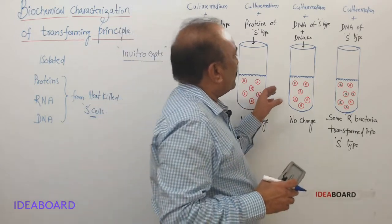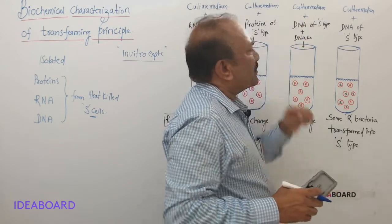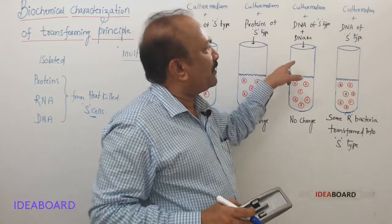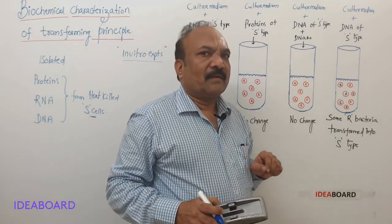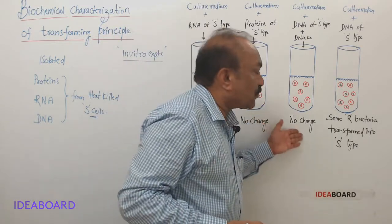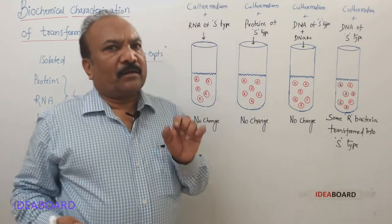Now let us see here. They have added DNA of S type cells, and also they have added one enzyme DNase. DNase will digest DNA. That is why there was no change.